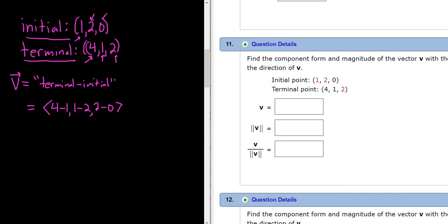So you just subtract each of the entries. So 4 minus 1, check. 1 minus 2, check. 2 minus 0, check. Everything looks okay. It's really easy to mess up in these problems. So 4 minus 1 is 3. 1 minus 2 is negative 1. And 2 minus 0 is 2. So this would be our vector v.